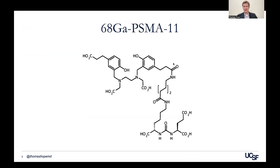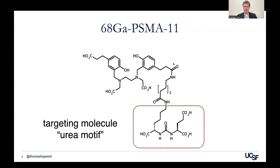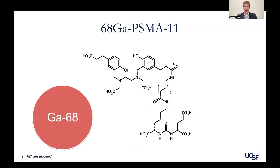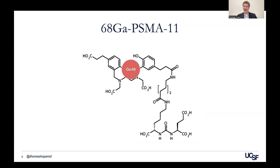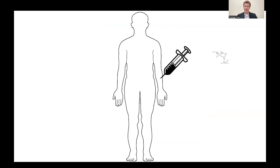This all started with gallium PSMA-11 — the molecule we use to image prostate cancer. On one end of the molecule is a chelator called HBED-CC, which binds to the radioactive metal, gallium-68. On the other side is the urea motif — the targeting molecule that binds to PSMA and carries that radioactivity into the tumor. We put gallium-68 into the chelator, inject the molecule into patients, wait an hour, and image in a PET-CT.